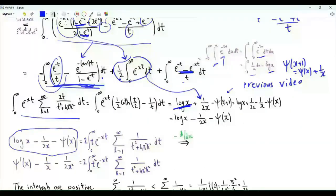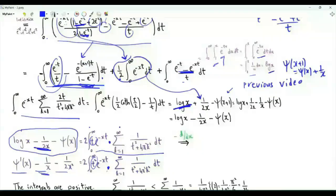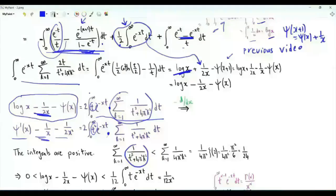To find bounds on log(x) - 1/(2x) - digamma(x), we differentiate both sides with respect to x and multiply by -1 to get trigamma(x) - 1/x - 1/(2x²), plus an integral where t is replaced by t². Both quantities are positive. For the upper bound, the summation over k from 1 to infinity of 1/(t² + 4π²k²) is upper bounded by 1/(4π²k²), and the sum of 1/k² is zeta(2) equals π²/6.